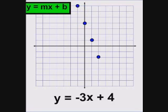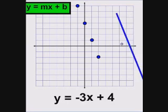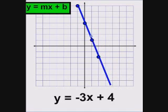Continuing with that same process, we go down three and right one again for a third point. We can also do the opposite — go up and left — and notice that everything lines up well. The absolute minimum number of points is two, but I highly recommend always graphing three points as a check. You can graph as many as you feel comfortable with — there are an infinite number of points on the line. Once you've got those points, connect them with a nice straight line and there we go. The graphing shortcut is a quick way to take the equation and generate the graph.